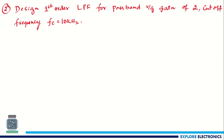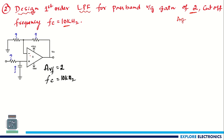Problem 2: Design a first-order low pass filter for a passband voltage gain of 2 and cutoff frequency of 10 kHz. Here we need to find suitable values of all resistors and capacitors that achieve fc = 10 kHz and Avf = 2.